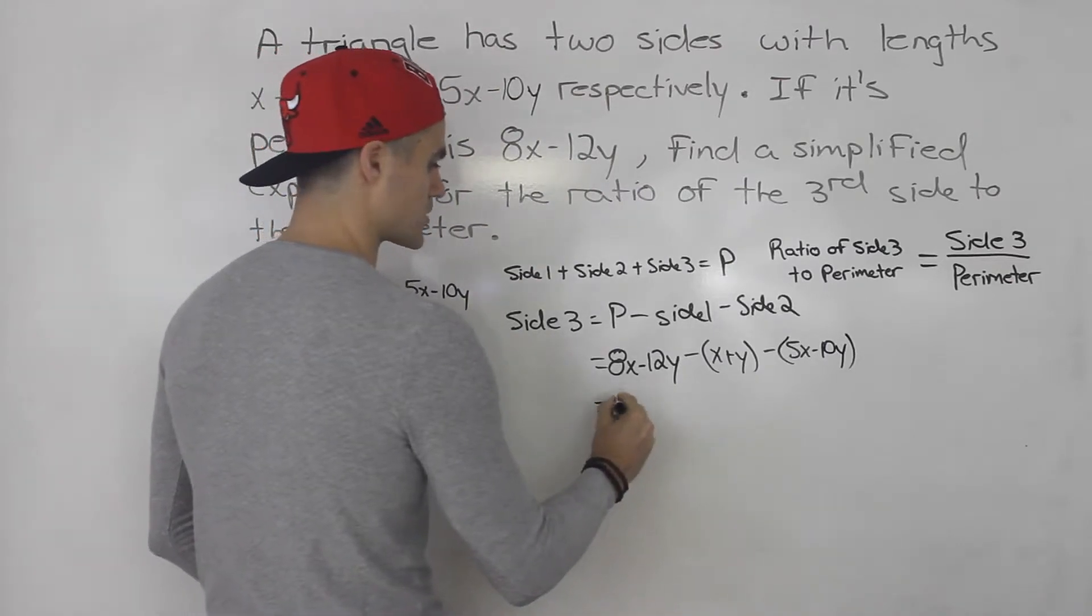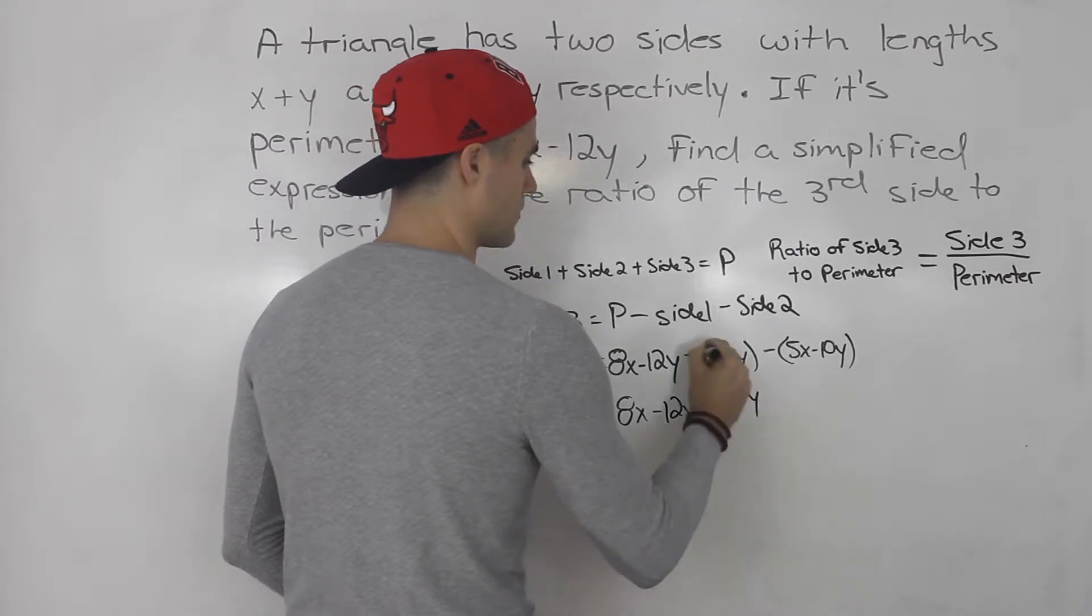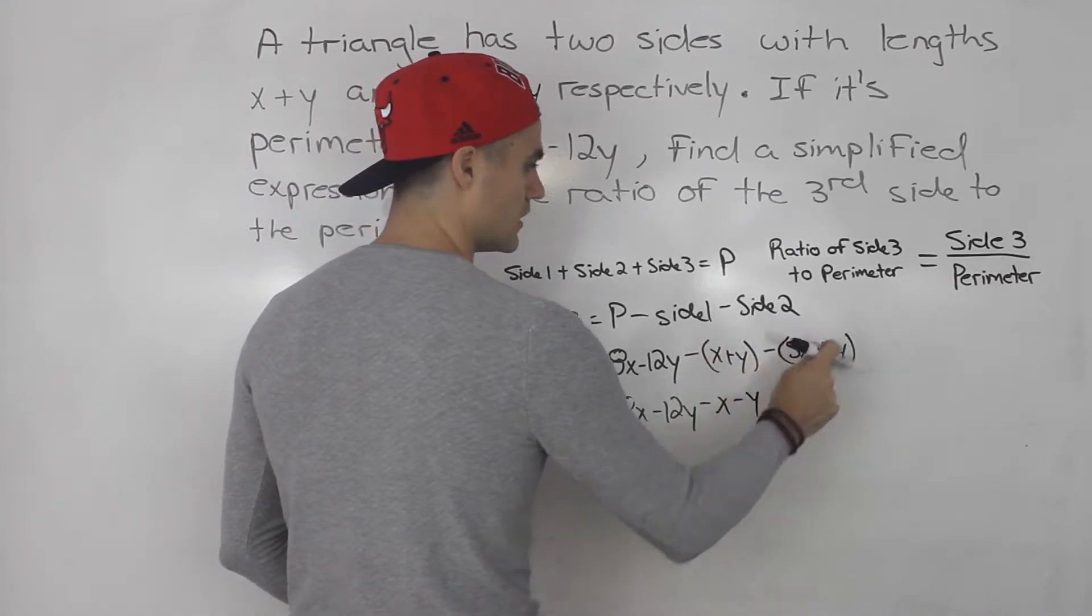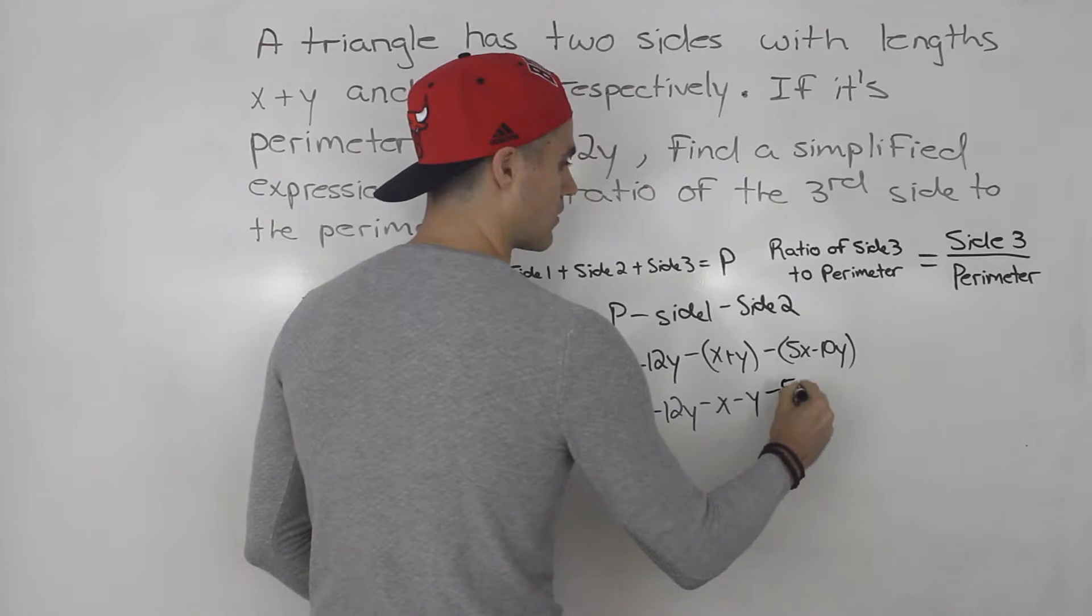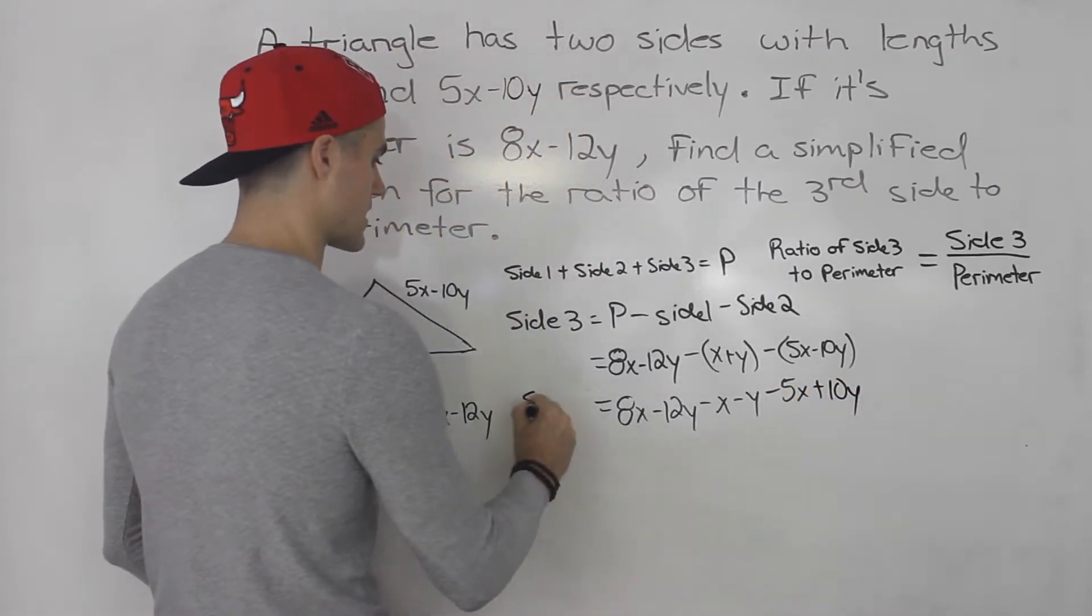Then from here, you can just simplify. So 8x minus 12y minus x minus y when we distribute that negative 1. Distribute the negative 1 here, all the signs change.